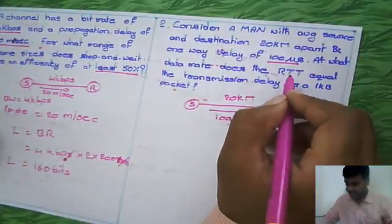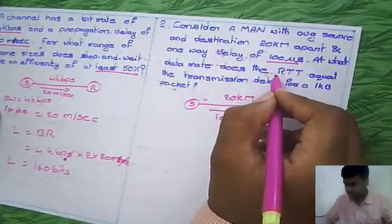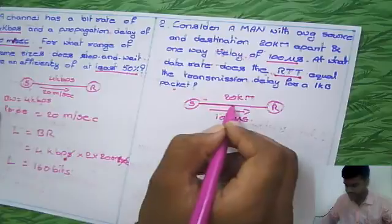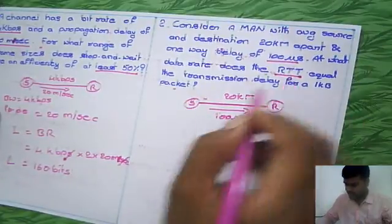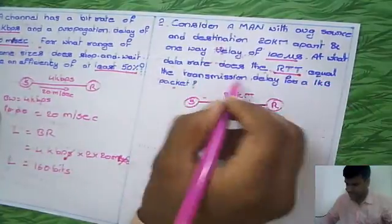The question asks at what data rate does the round-trip time equal the transmission delay. In other words, at what bandwidth - this channel bandwidth - does round-trip time equal the transmission delay?